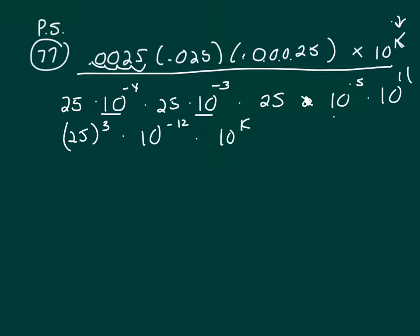Now 25 to the 3rd is an integer. It's one I've memorized - it's actually 15,625, which you don't have to know. But what I want you to realize is we want this to stay an integer.